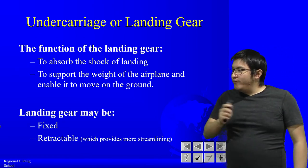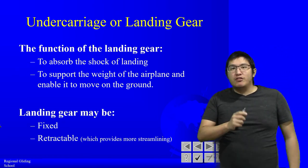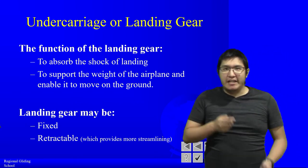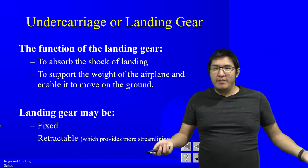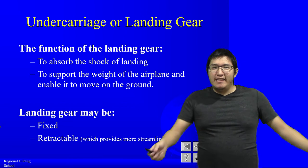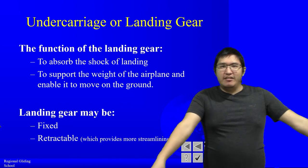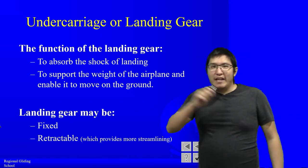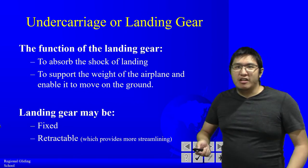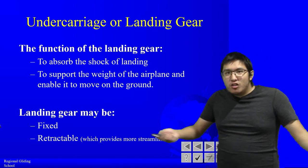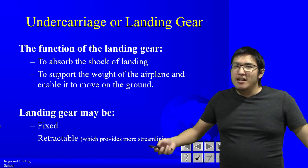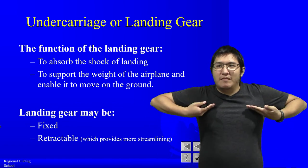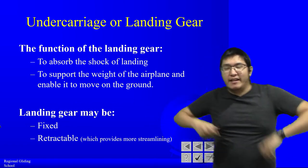Landing gear may be fixed or retractable. Fixed gear, as you may have seen in gliders or Cessna 172s, sticks out and stays there. Retractable landing gear, seen in more modern or commercial aircraft, retracts into the wing once you are up in the air to reduce drag.